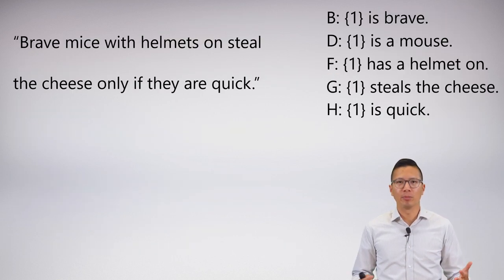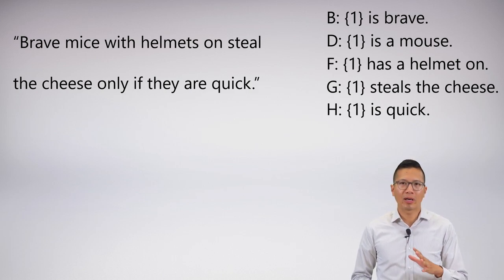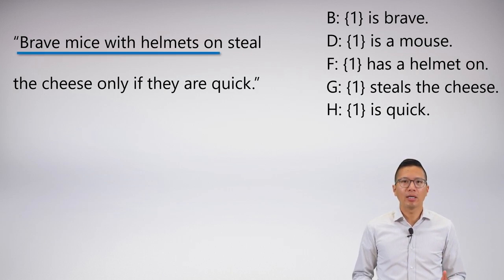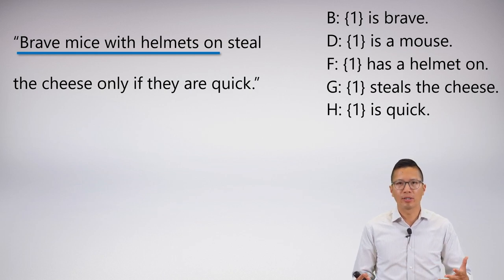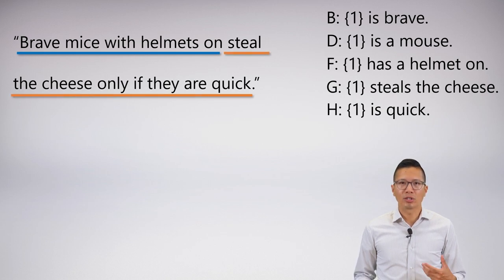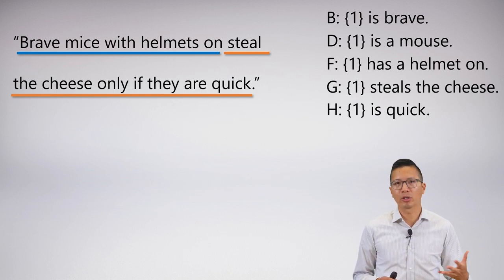Let's symbolize: 'Brave mice with helmets on steal the cheese only if they are quick.' When you look at a question like this, one of the first things you want to do is identify what the group or subject of the sentence is. It seems that what we're talking about are brave mice with helmets on. Then, what property are we bestowing on this subject? We're saying that they steal the cheese only if they are quick. So we have a clear breakdown between our subject and the property.